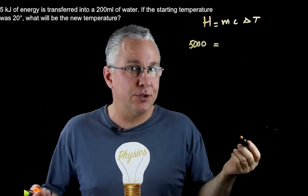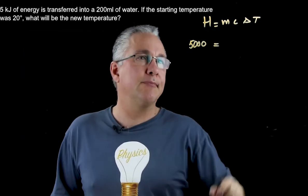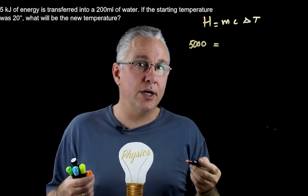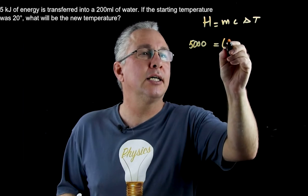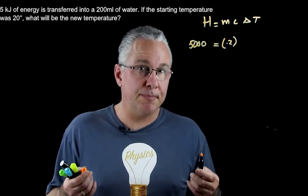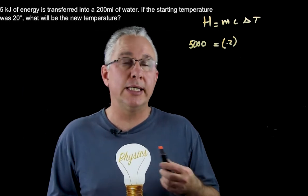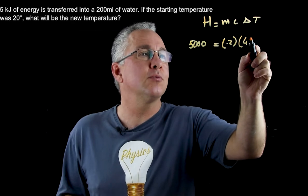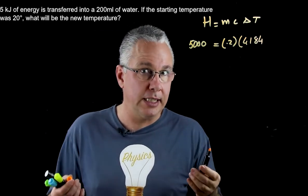We know the starting temperature is 20 degrees, so we can determine the final temperature once we know delta T. Our mass: we've got 200 millilitres, which is equivalent to 200 grams, but in correct SI units that is equal to 0.2 kilograms. The specific heat capacity is often quoted either in terms of grams or kilograms, and I'm going to be using the kilogram value, which is 4184 in terms of kilograms.